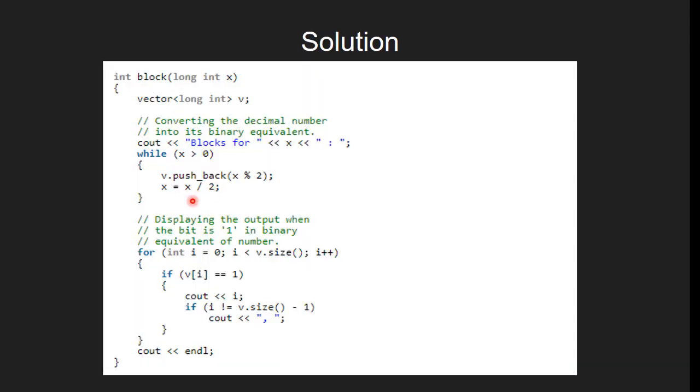Now we have obtained the binary form of x and stored it in vector v. Finally, we simply run a for loop and in each iteration, we check if the current bit is 1. If true, then we print i as we continue as long as there are bits remaining in the vector. And here, this statement is just used to place comma between two values.